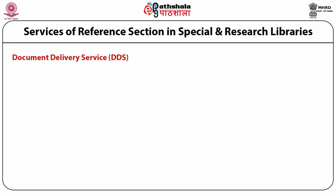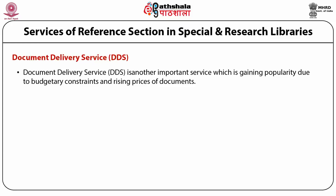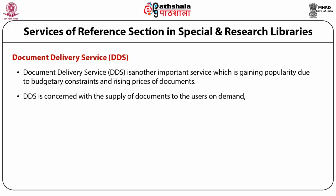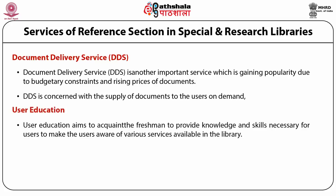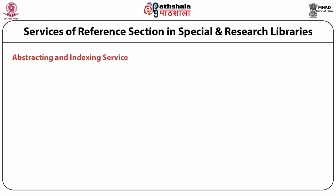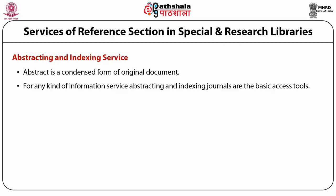Number three, document delivery service: this service is gaining popularity due to budgetary constraints and rising prices of documents. It is concerned with the supply of documents to the users on demand. Number four, user education: user education aims to acquaint the fresh user with knowledge and skills necessary to make the user aware of various services available in the library. Number five, abstracting and indexing service: an abstract is a condensed form of the original document and acts as a current awareness tool. Abstracting and indexing journals are the basic access tools. Examples of such services are chemical abstract, biological abstract, etc.